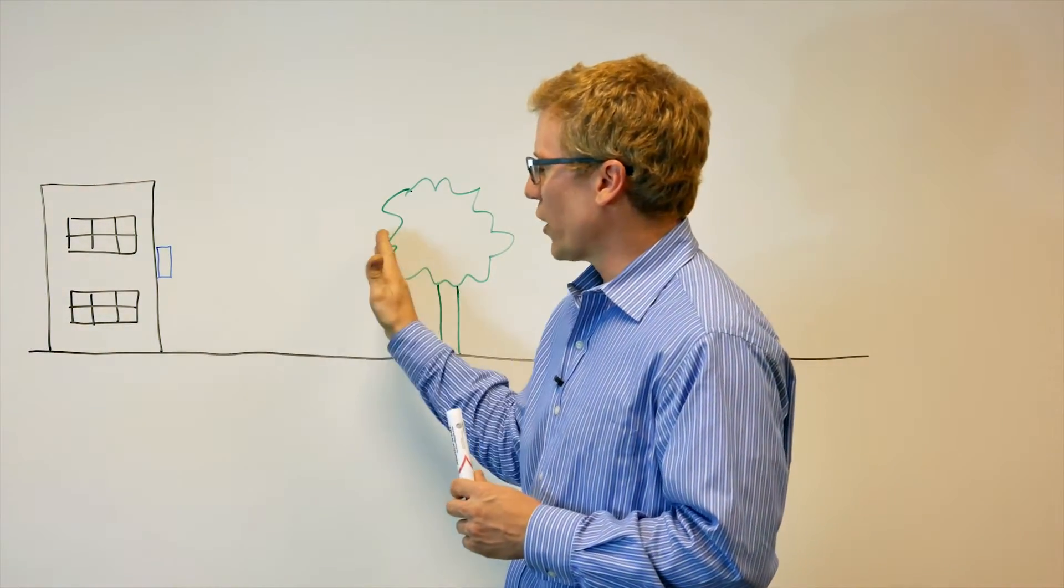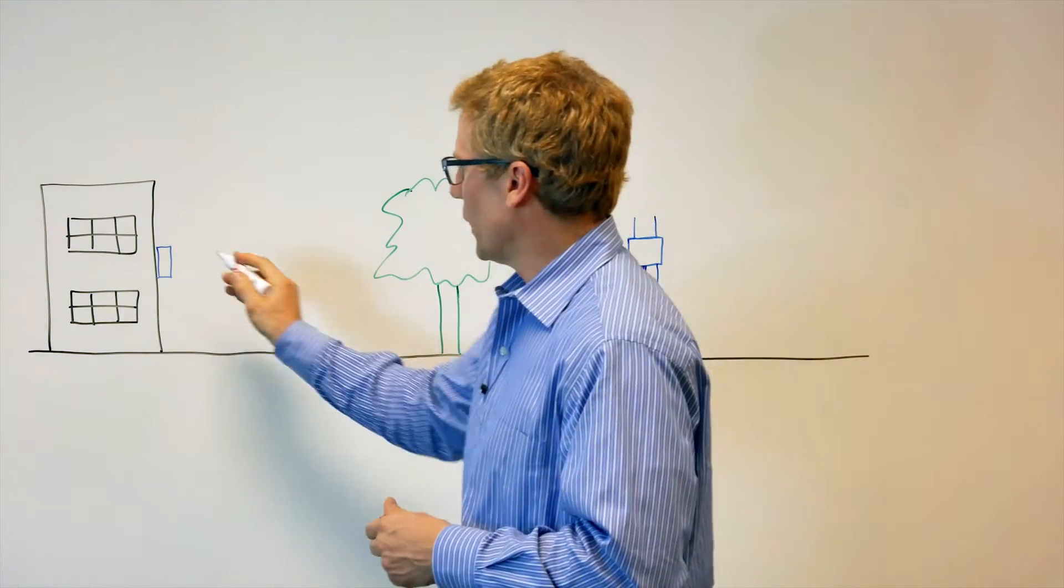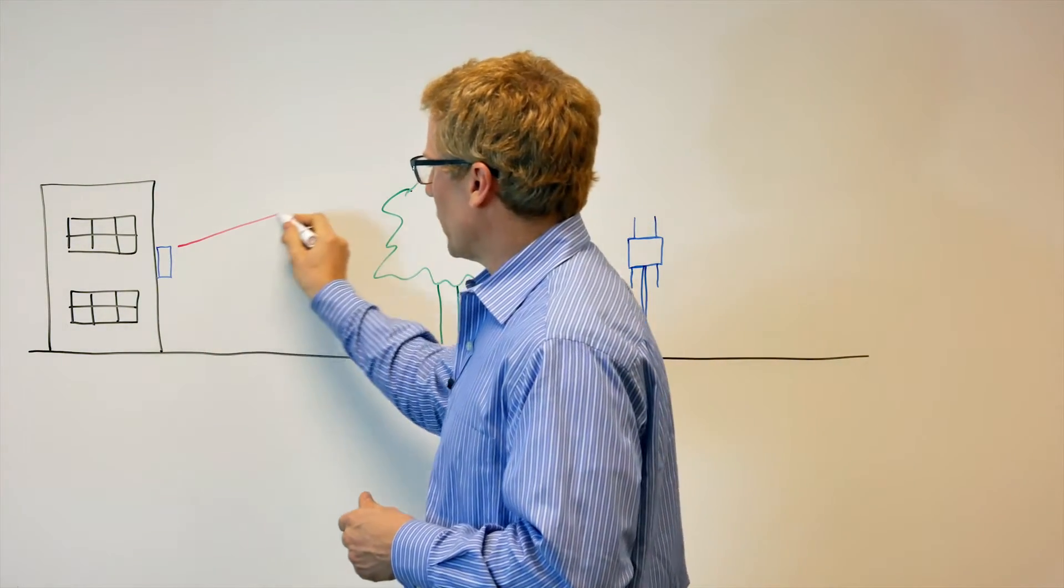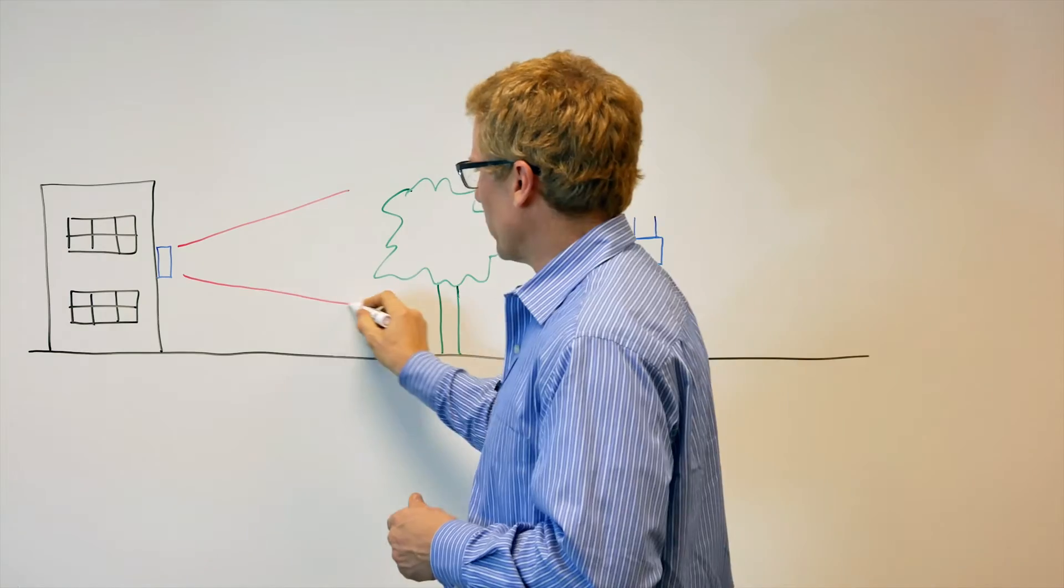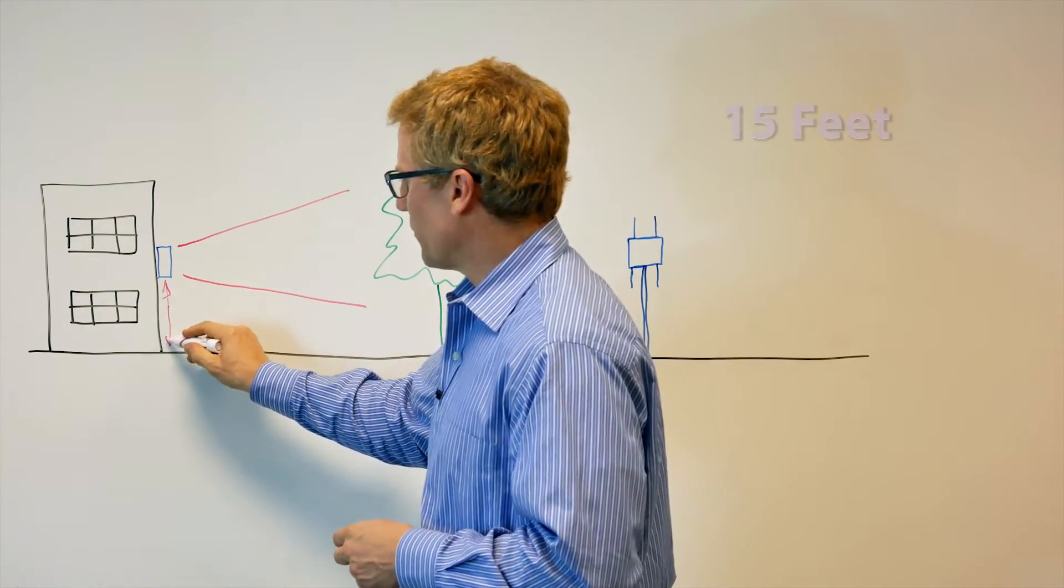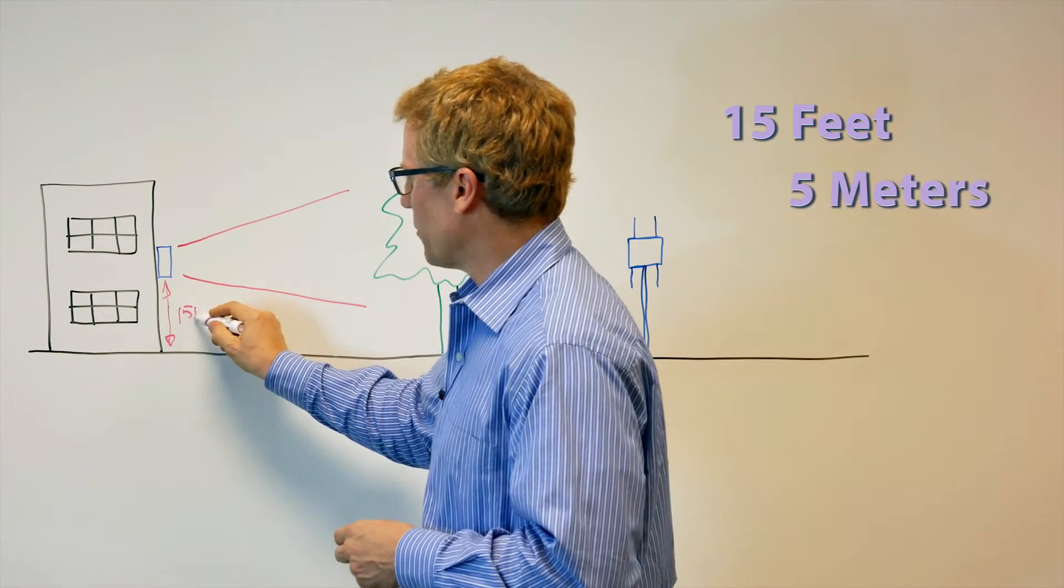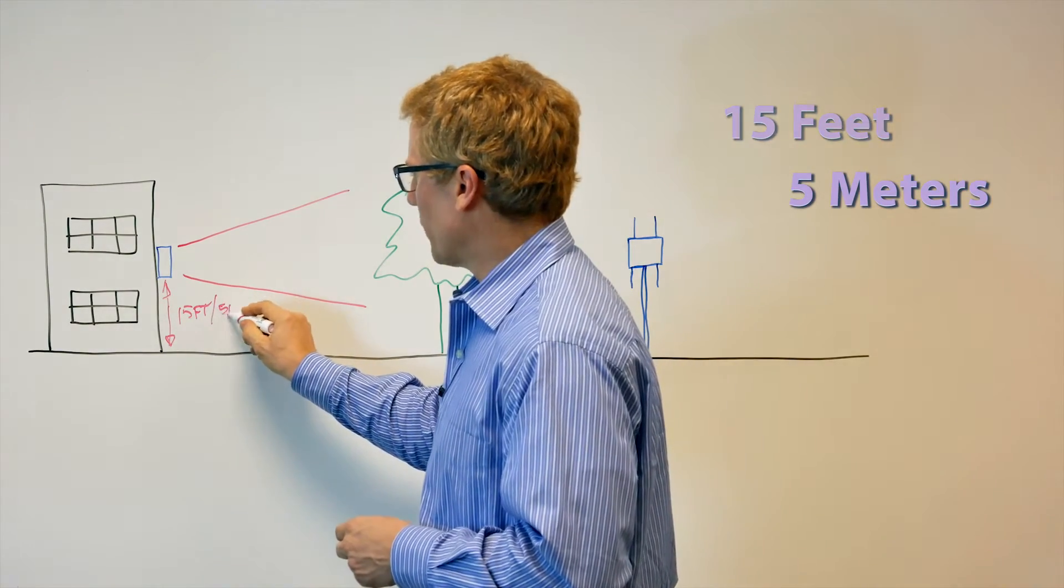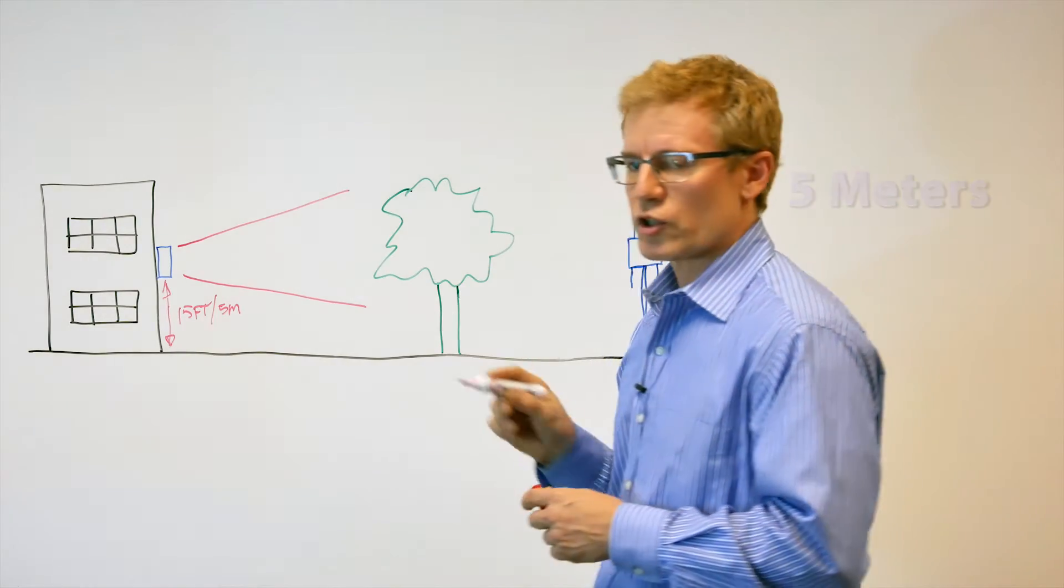This access point would be able to transmit and receive horizontally, but in reality, there's going to be some amount of dispersion. For this reason, you want to mount the access point approximately 15 feet or 5 meters above the ground. That's a good starting point.